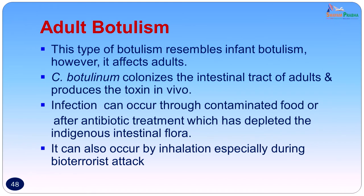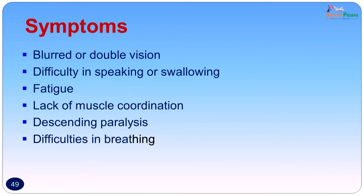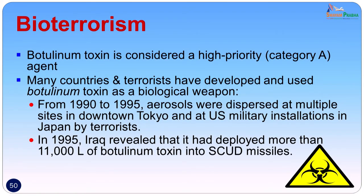Adult botulism can also occur by inhalation, specially during a bioterrorist attack. Symptoms include blurred or double vision, difficulty in speaking or swallowing, fatigue, lack of muscle coordination, descending paralysis, and difficulty in breathing. Botulinum toxin is considered a category A high-priority agent for bioterrorism. From 1990 to 1995, aerosols were dispersed at multiple sites in Tokyo and at US military installations in Japan by terrorists. In 1995 Iraq revealed it had deployed more than 11,000 liters of botulinum toxin into Scud missiles.